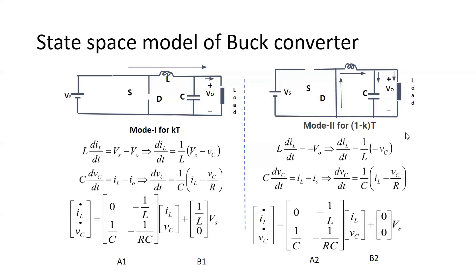For mode 2, which lasts for duration T-off equal to (1 minus k) times T, we write the differential equations for L and C. In mode 2 the supply is disconnected, so the inductor voltage equation gives L times diL/dt equals minus Vout, which means diL/dt equals (1/L) times (minus vC). Similarly, using KCL at the output node, C times dvC/dt equals iL minus i-out, giving dvC/dt equals (1/C) times (iL minus vC/R).